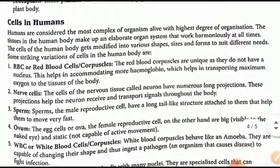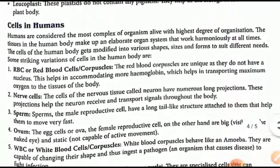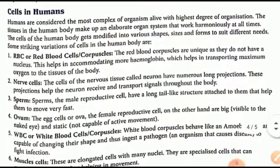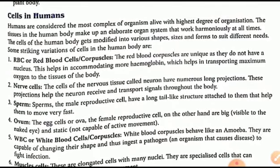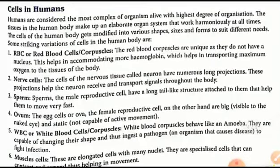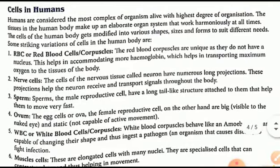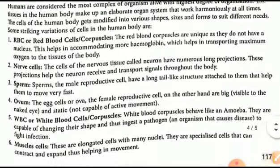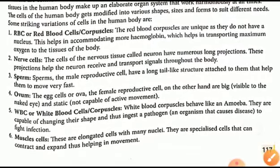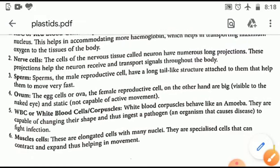Now coming to cells in human beings. Human beings are considered the most complex organisms alive with the highest degree of organization. The tissues in the human body make up an elaborate organ system that works harmoniously at all times. The cells of the human body get modified into various shapes, sizes, and forms to suit different needs.